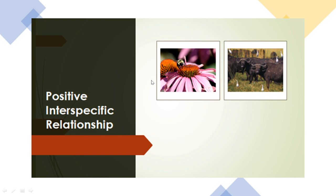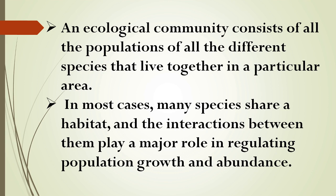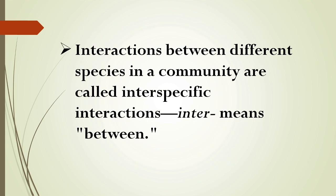Let's study about positive inter-specific relationships. In a community, we see that they consist of all the populations of different species that live together in a particular area, and all these populations are not isolated. In most cases, many species share a habitat and the interactions between them play a major role in regulating population growth and abundance. Interactions between different species in a community are called inter-specific interactions.